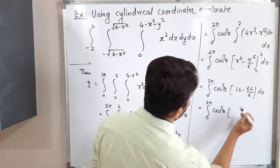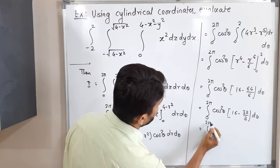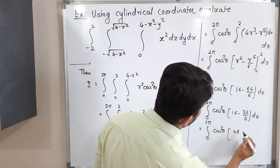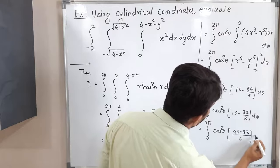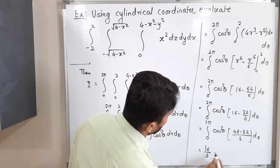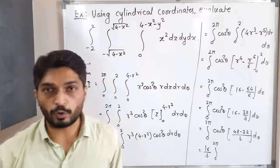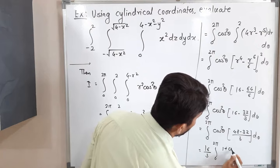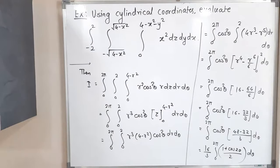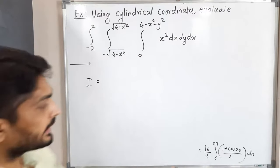So the integral reduces to (16/3)·∫₀^{2π} cos²θ dθ. Using the formula cos²θ = (1 + cos2θ)/2, we get (16/3)·(1/2)·∫₀^{2π} (1 + cos2θ) dθ = (8/3)·∫₀^{2π} (1 + cos2θ) dθ.